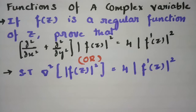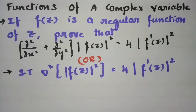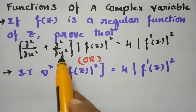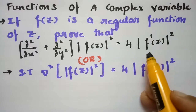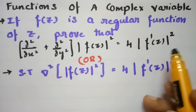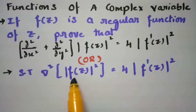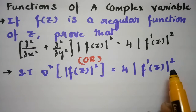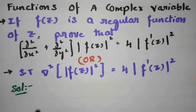In today's video I am going to explain the most important problem from functions of a complex variable. If f(z) is a regular function of z, we have to prove that (∂²/∂x² + ∂²/∂y²)|f(z)|² = 4|f'(z)|², or equivalently ∇²|f(z)|² = 4|f'(z)|². This is the question and we have to prove this.